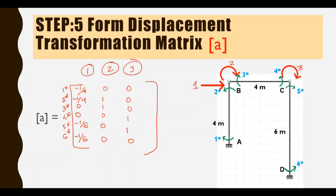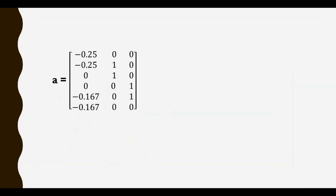This is how to develop the displacement transformation matrix. Taking the matrix in decimal format: minus 1/4 is 0.25, so the matrix A contains values minus 0.25, minus 0.25, zero, zero, zero, and minus 1/6 is minus 0.167. The displacement transformation matrix is obtained, and we will also require its transpose, so let us write down the transpose here.